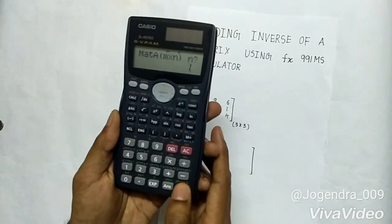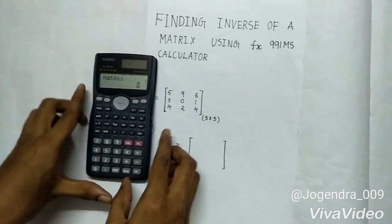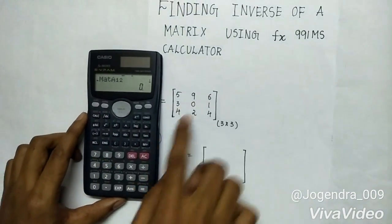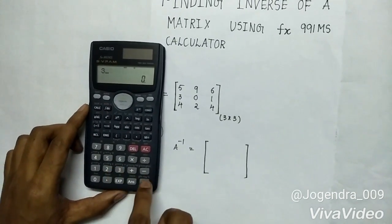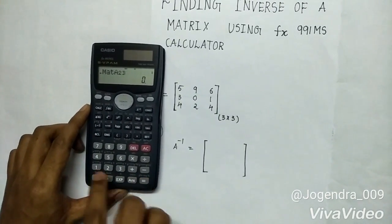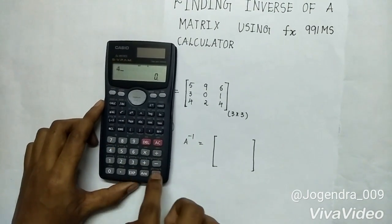So press 3 equals 3 equals. The elements of the present matrix are 5, 9, 6, 3, 0, 1, 4, 2, and 4.